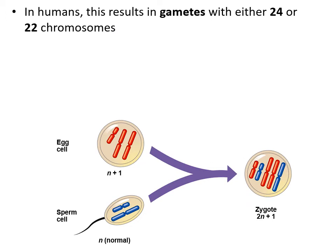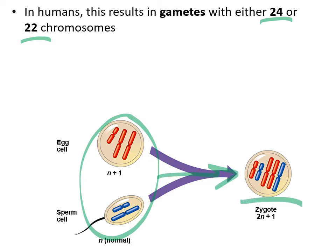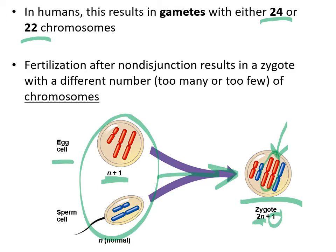In humans, the resulting gametes are going to have either more or fewer chromosomes. If they are then combined into a zygote, that zygote is going to have more or fewer chromosomes. In this particular case, this gamete has one extra chromosome, so when it fuses with another sex cell there's going to be two of these — in this case from the egg, so maternal chromosomes. This is a diploid zygote with one extra chromosome. Fertilization after non-disjunction results in a zygote with a different number of chromosomes — too many or too few.